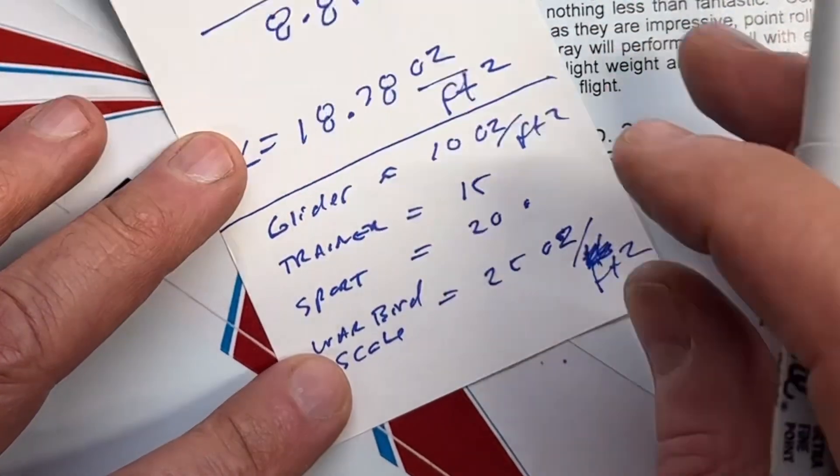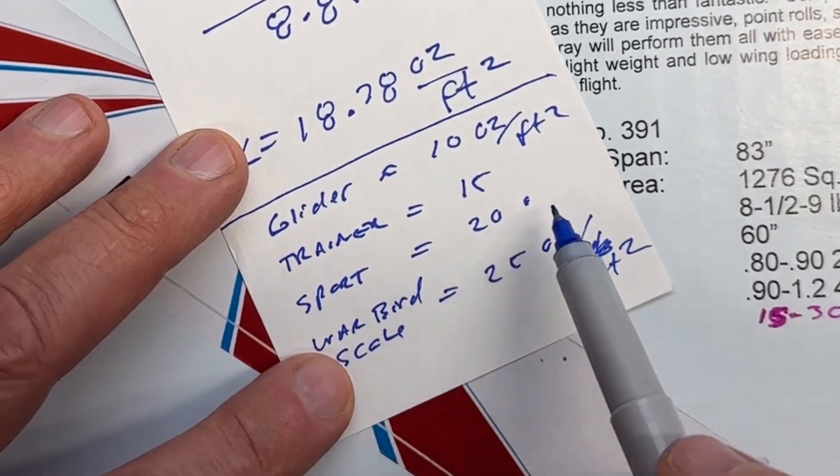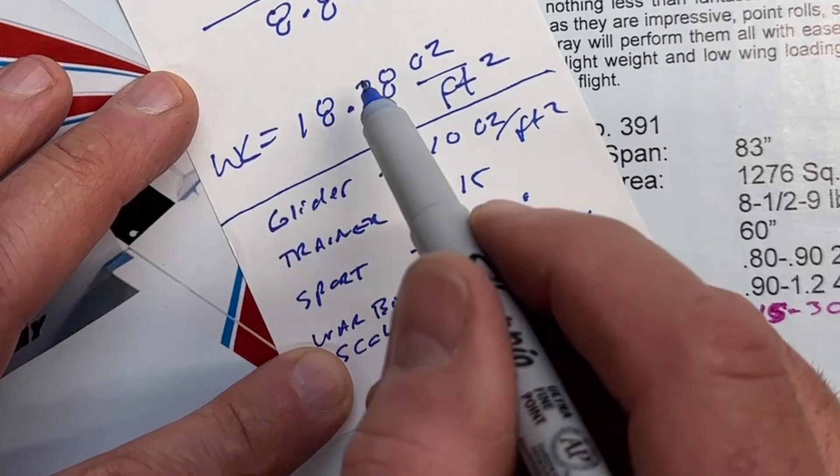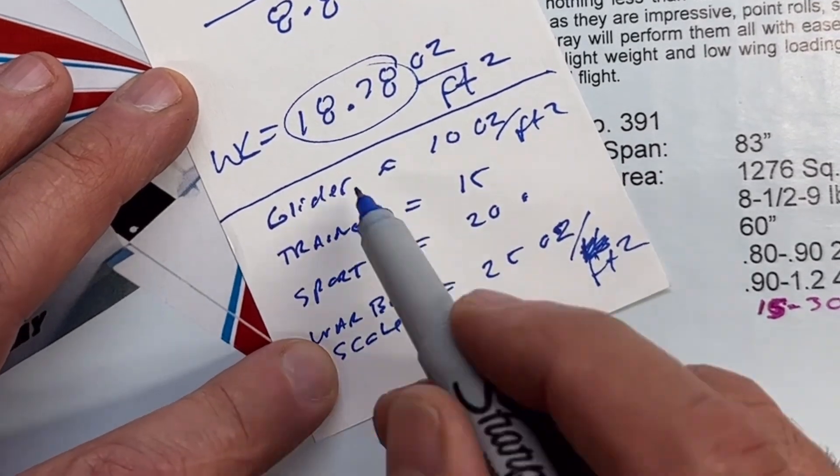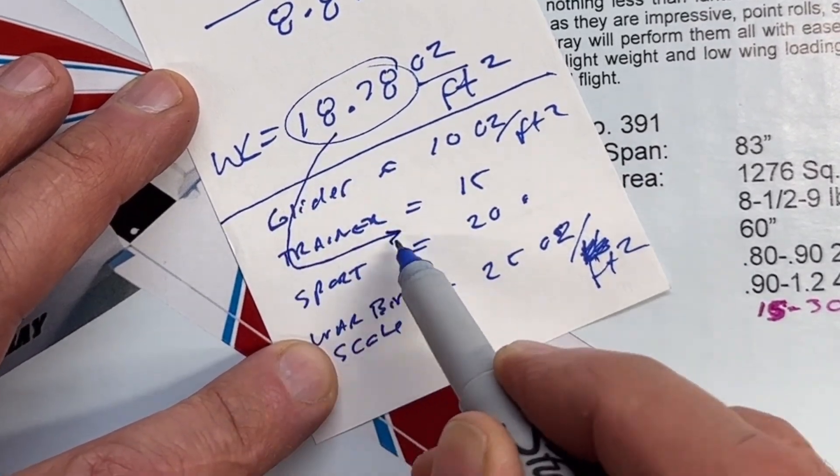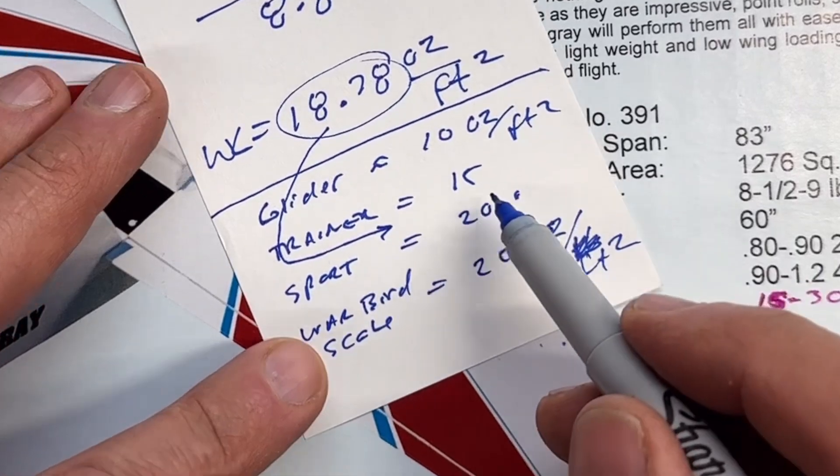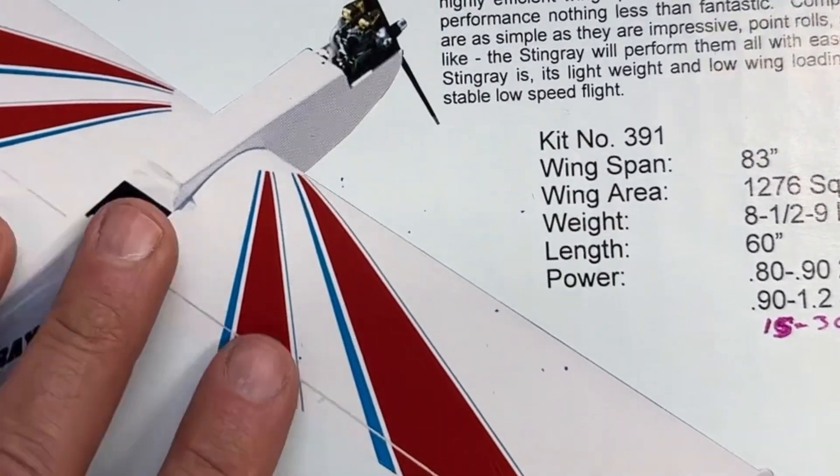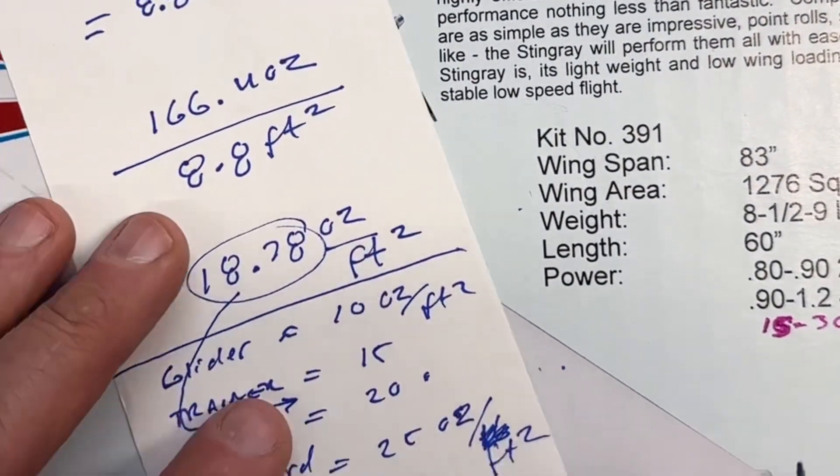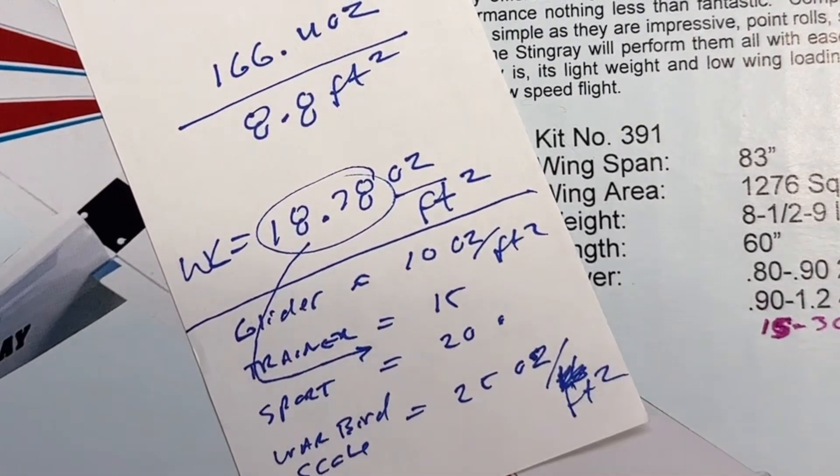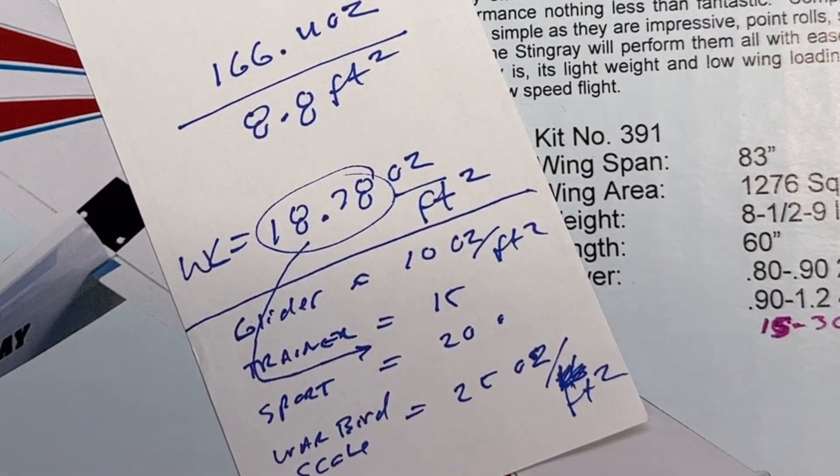And so our number, like I said, came in at 18.78 here. And that puts us right in between a trainer and a sport, which I'm really happy with, because this plane is basically that. It's basically a sport plane and came in really good with the numbers for the wing loading.